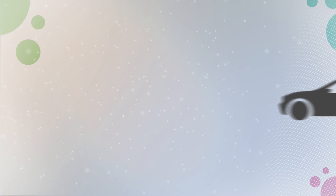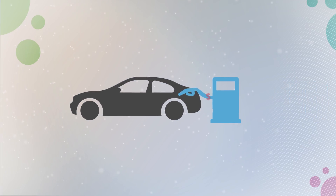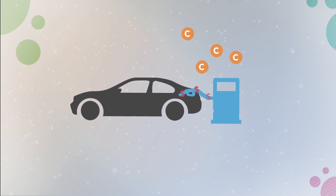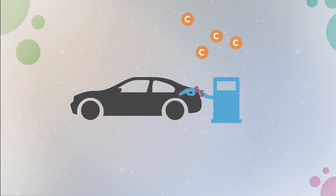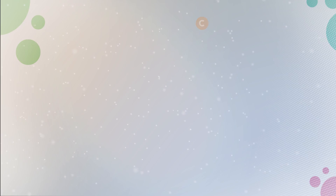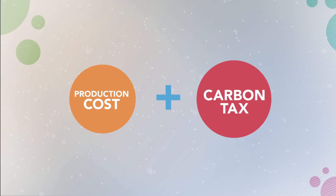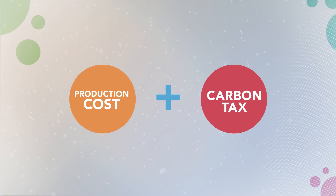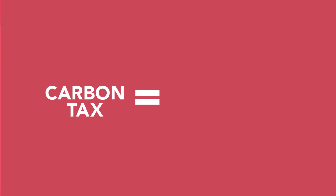Externalities can be accounted for by imposing taxes on goods which create harm to the environment. An example could be a carbon fee linked to the amount of carbon released into the atmosphere when a product is consumed. The price paid by the consumers would include the cost to produce a good plus a tax. If the tax is set equal to the external costs, then the market would reach the efficient level of production.